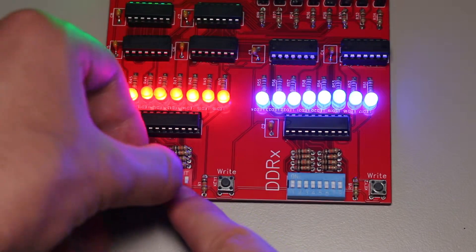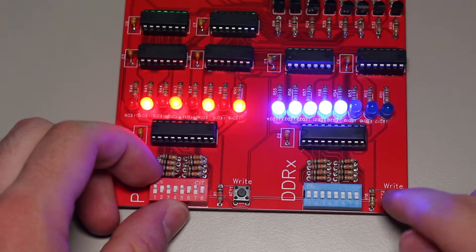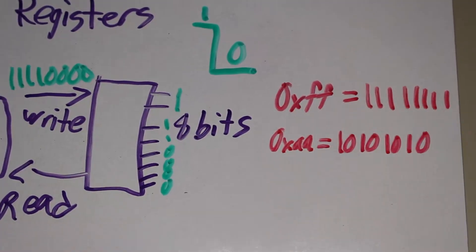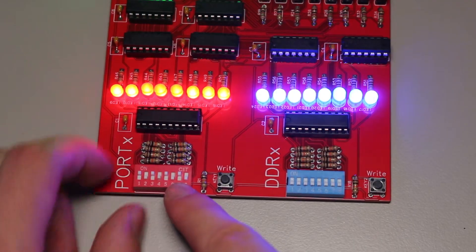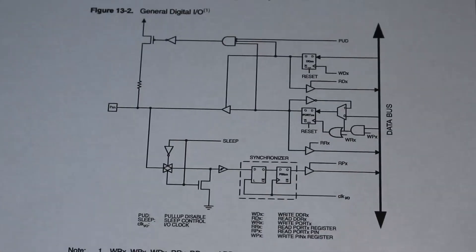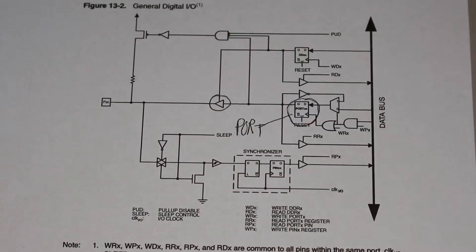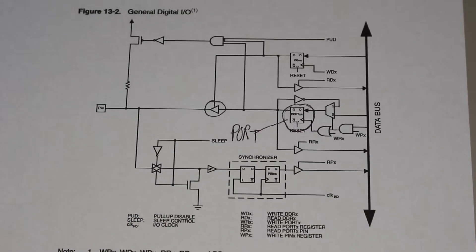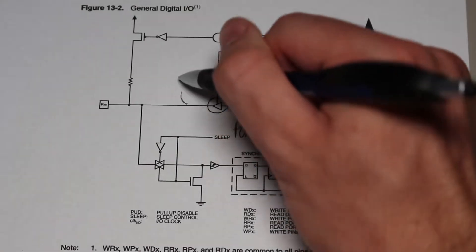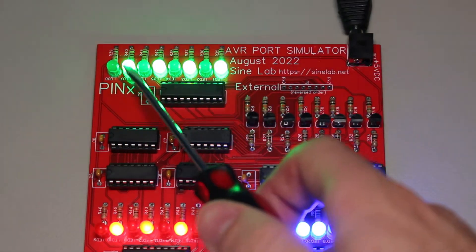Let's write these values into the registers. 0xFF represents all 1s, so we can write that in. 0xAA is simply alternating 1s and 0s. While it's great that we can save this data, how do these registers directly affect the output? Well, we can take a look at the datasheet to find out. We can see that the port register is connected to the output through a buffer. A buffer simply outputs the same logic level as its input — so a 1 on the input leads to a 1 on the output. We can already see that the output, which is the green LEDs at the top, matches the port register.